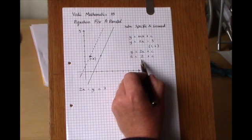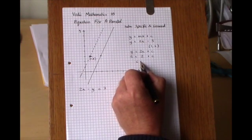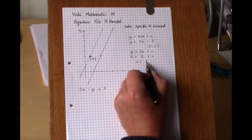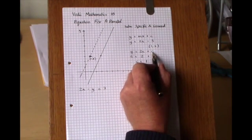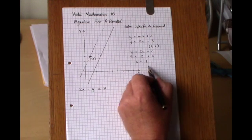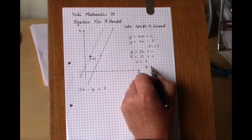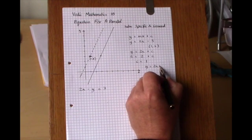Solve this for c: c equals 3 take away 2 is 1, and then substitute back this value of c into the temporary equation here, so y equals 2x plus 1.